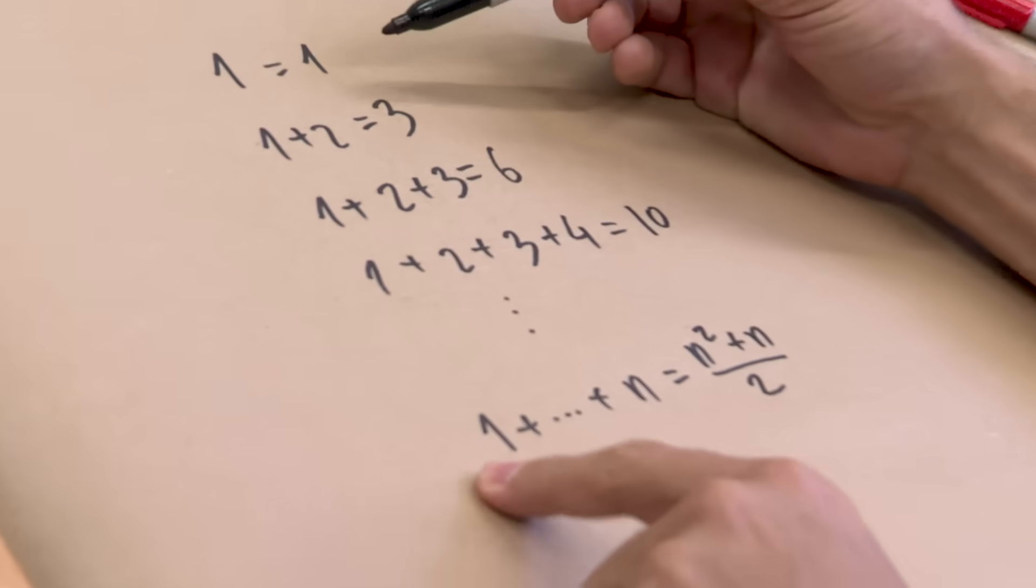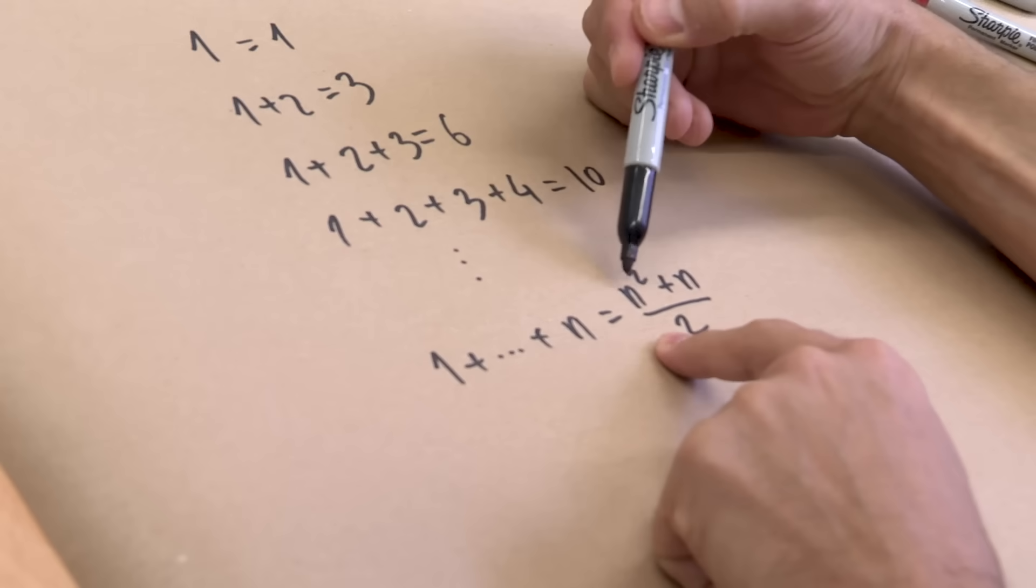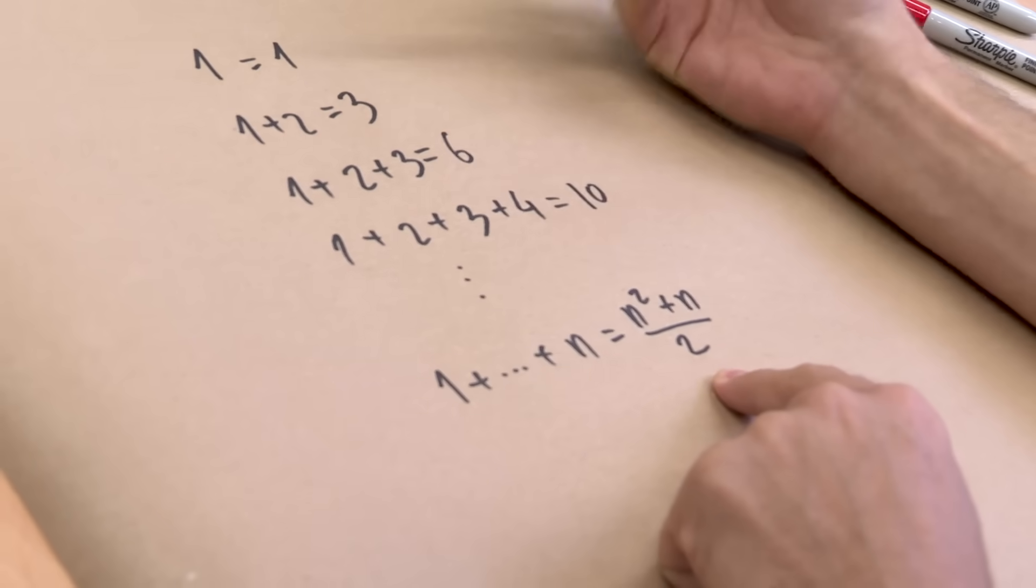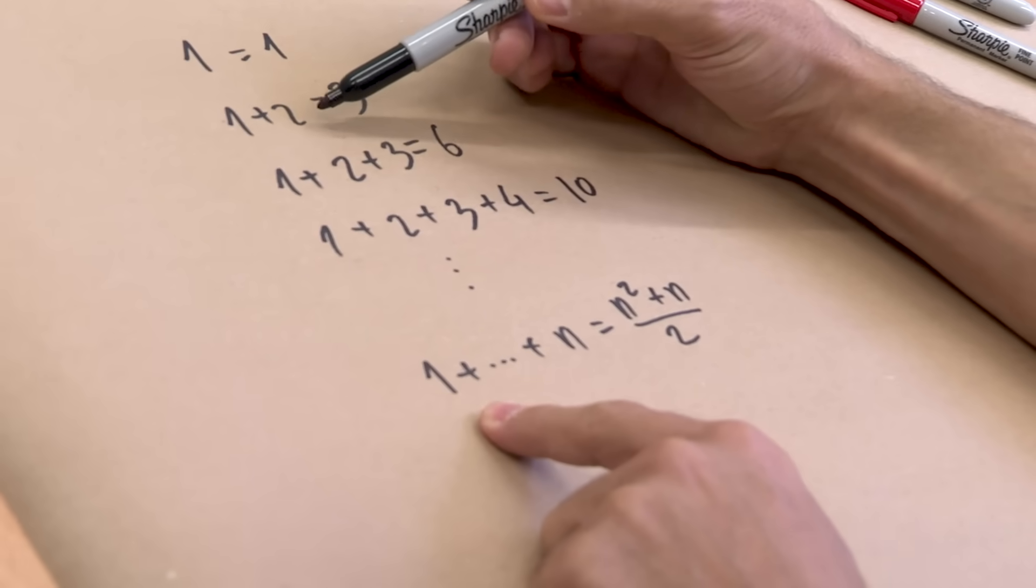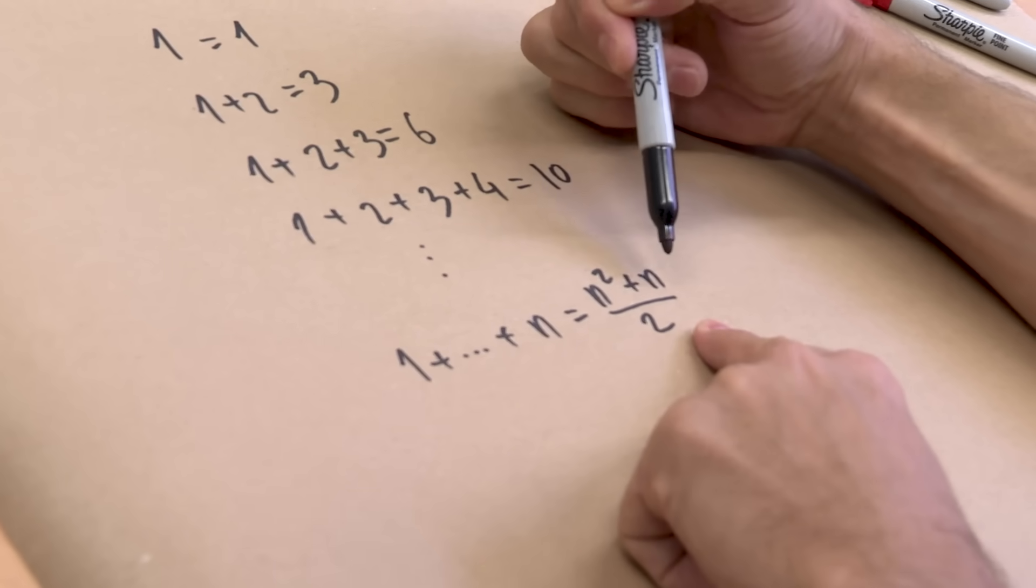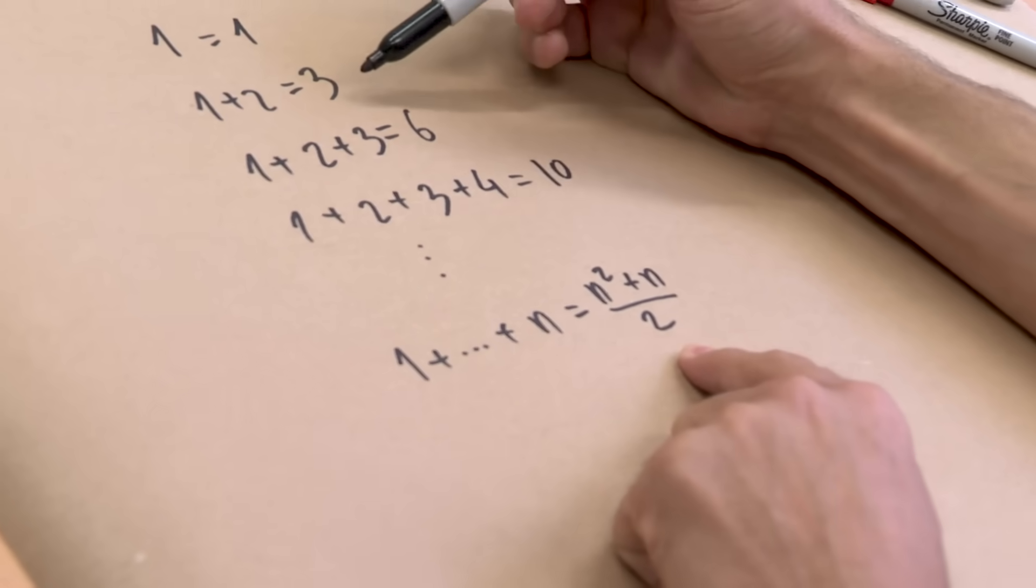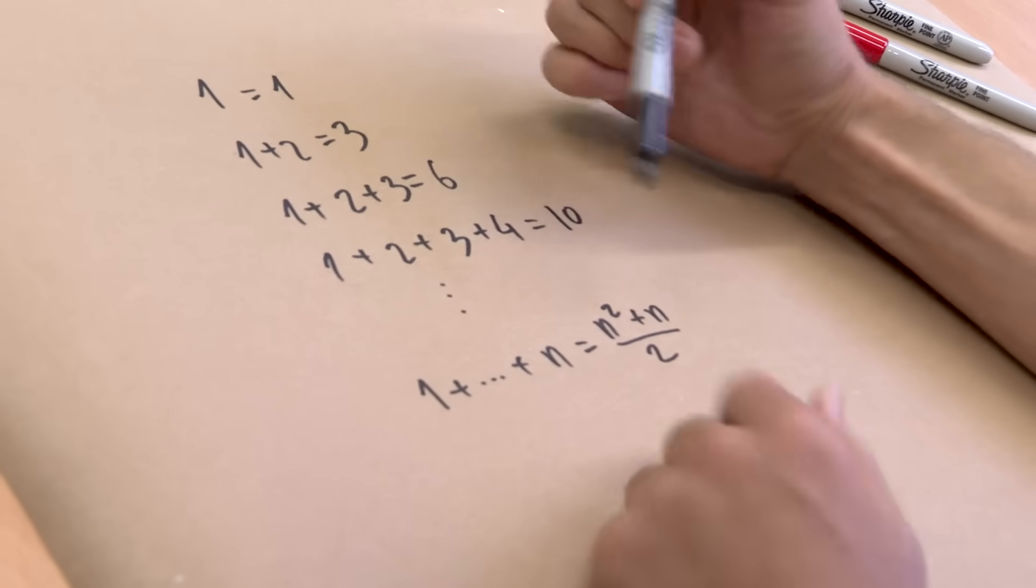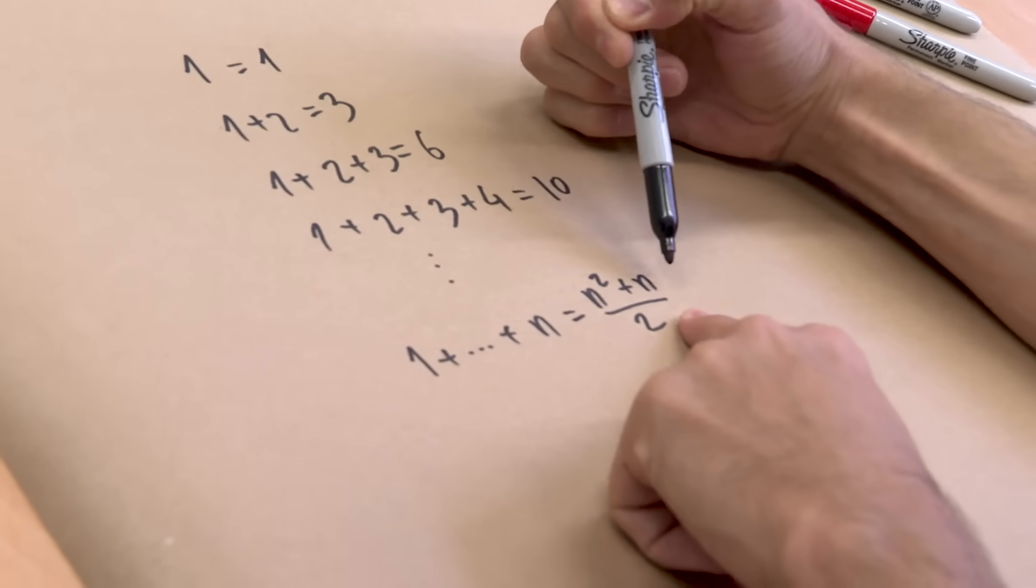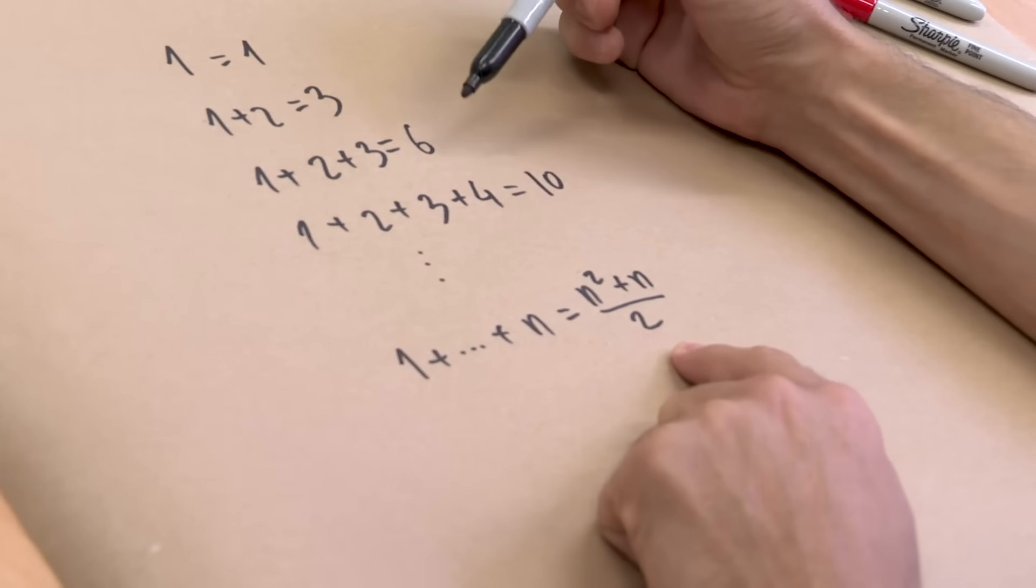So if n equals 1, we're just summing 1, that's 1 plus 1 divided by 2, that's fine. If n equals 2, we have 4 plus 2, that's 6, divided by 2, that's 3. If we have n equals 3, this is 9 plus 3, that's 12, divided by 2, 6.